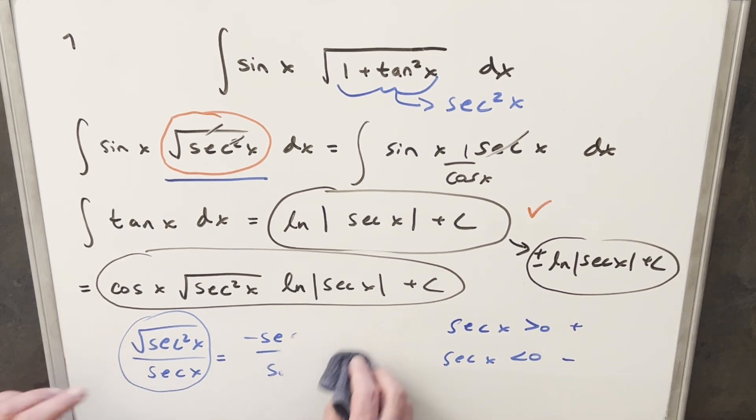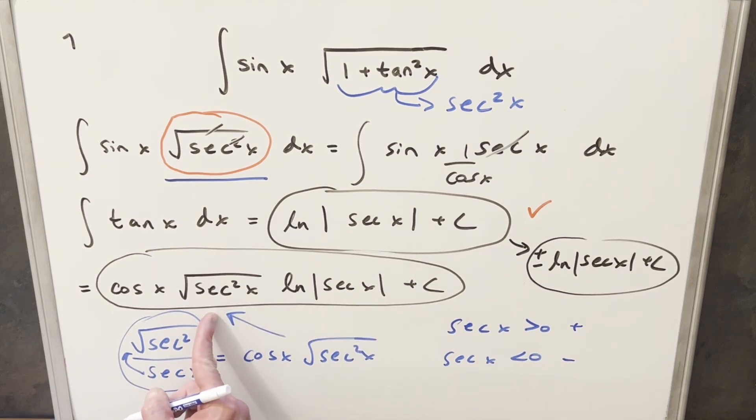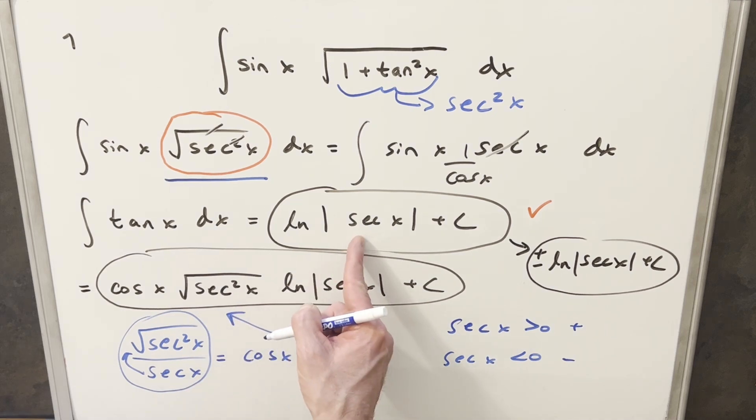Now here I've written it as secant x in the denominator, but we can take the reciprocal and bring it into the numerator and write it as cosine x squared secant squared x. So this right here is exactly what they have in the Wolfram Alpha solution, just multiplied by our first solution.